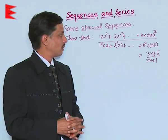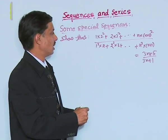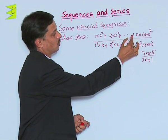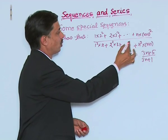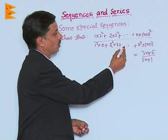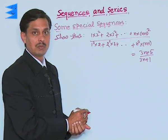One more problem based on some special sequences is 1 into 2 square plus 2 into 3 square plus dot dot dot plus n into n plus 1 square upon 1 square into 2 plus 2 square into 3 plus dot dot dot plus n square into n plus 1 is equals to 3n plus 5 upon 3n plus 1.